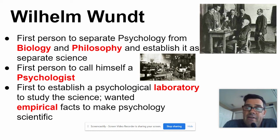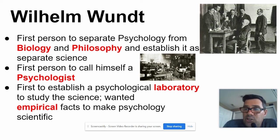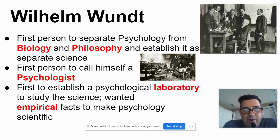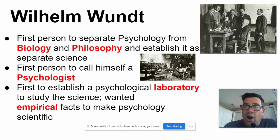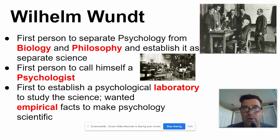Empirical means you're collecting data — you're proving it factually, not just giving an opinion. You might want to write 'data-driven facts: can be proven through science' — that's what empirical means, proven through experimentation. That's it for the first lesson on Wilhelm Wundt. It's very short, but there is some practice for it, so make sure you do that.